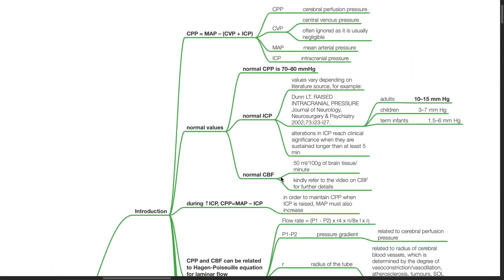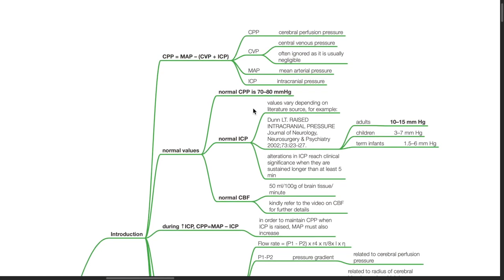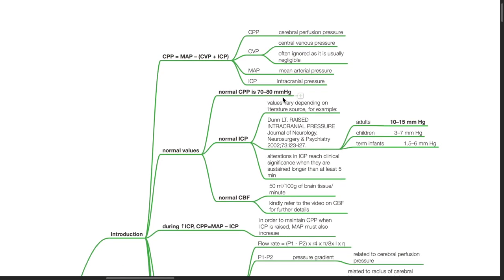Introduction. Cerebral perfusion pressure equals mean arterial pressure minus central venous pressure plus intracranial pressure. Normal CPP is 70 to 80 mmHg. Normal ICP values vary depending on literature source. For example, in research by Doon LT in 2002, normal ICP for adults is 10 to 15 mmHg, in children 3 to 7 mmHg, and term infants 1.5 to 6 mmHg.